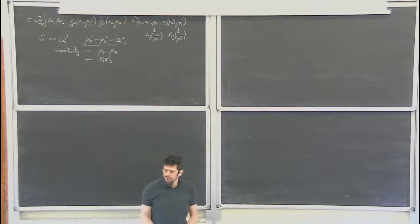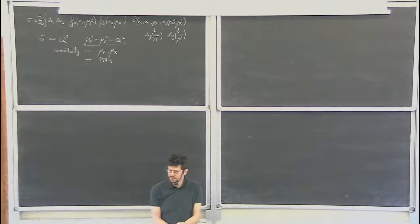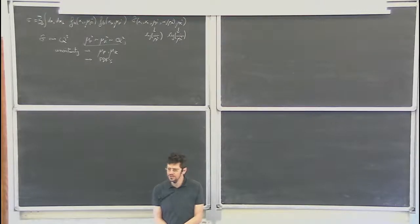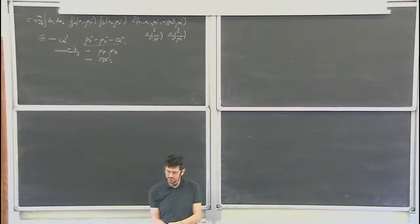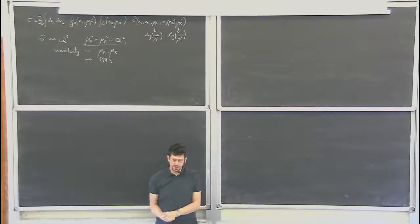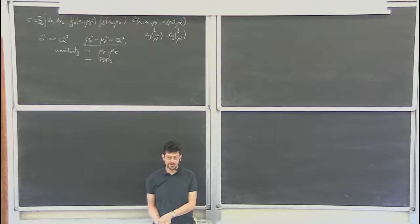If you're looking at tt-bar inclusive, the scale is the mass of the top. But if you have any additional scale — for example measuring the PT of the top — and if the PT of the top is much smaller than the mass of the top, then the mass of the top is the relevant scale. If the PT becomes much larger than the mass, say one or two TeV in transverse momentum, then the PT of the top becomes the relevant scale. I assumed here there's only one scale; when there are multiple scales, this choice can become more delicate.